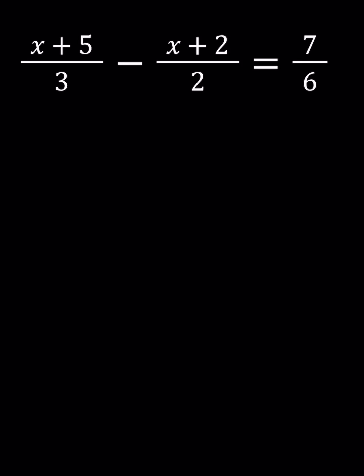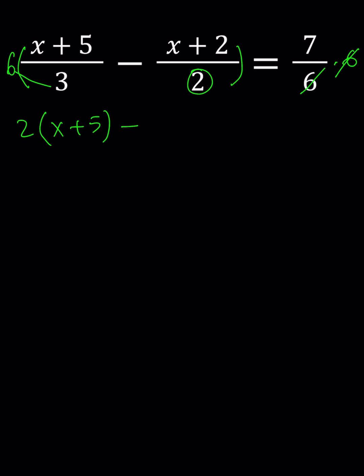Hello everyone. To solve this linear equation, we're going to multiply both sides by 6 because that's the least common denominator. 6 cancels out here. 3 goes into 6 twice, so we're going to write this as 2 times x plus 5. And 2 goes into 6 three times, so we're going to write it as 3 times x plus 2 equals 7.